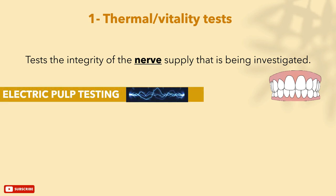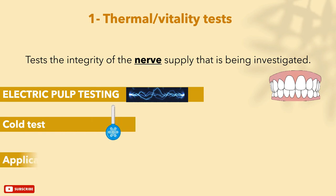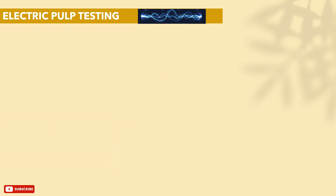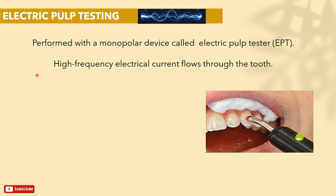We will be covering the electric pulp test, cold test, and application of heat. The electric pulp test is performed using a monopolar device called an electric pulp tester. It sends a high-frequency current through the tooth, which results in activation of sensation fibers, and the patient will feel a tingling or zinging sensation. The electric pulp test should always be used on a dry tooth; soft tissues should be protected, and a prophy paste or other lubricants can be used as a conductive medium.